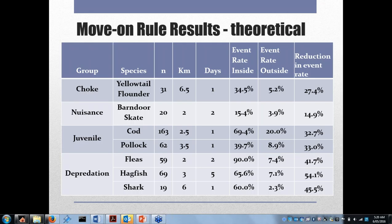You get some very large decreases in hagfish depredation rates — 50-some odd percent reduction — as well as 32 or 33 percent reductions in juveniles. So you can use this across a number of different types of bycatch.